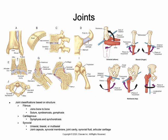A gomphosis is a special type of fibrous joint where a conical projection fits into a complementary socket, held together by a ligament. Our teeth held in the maxilla or mandible are an example of a gomphosis joint.